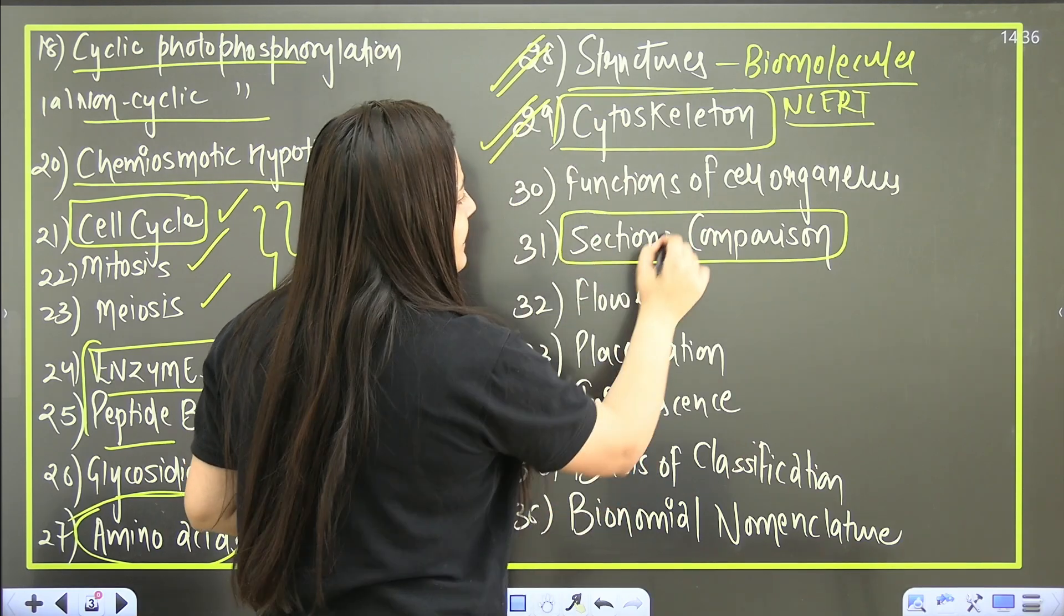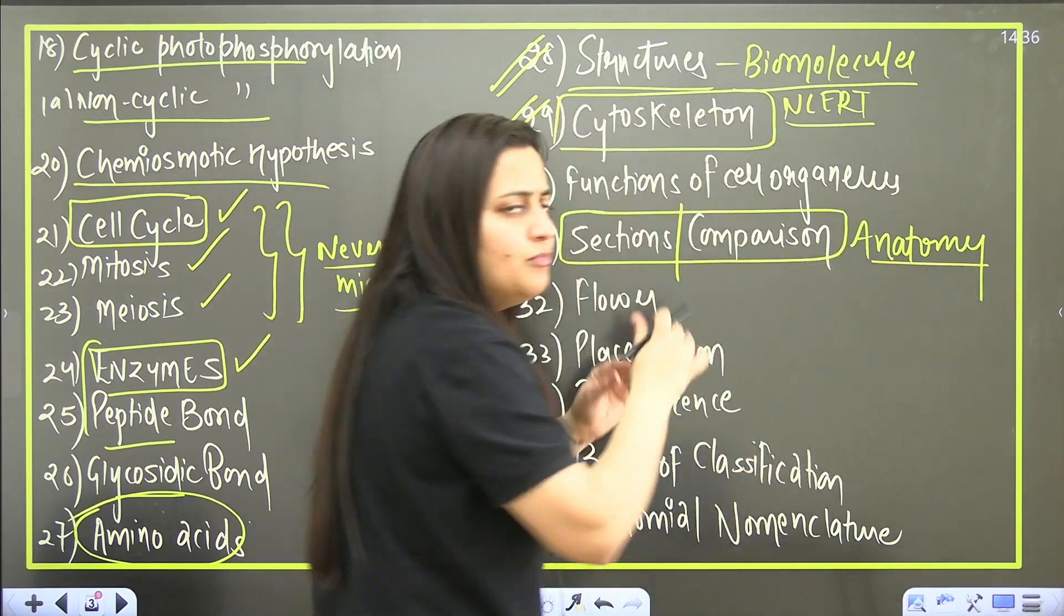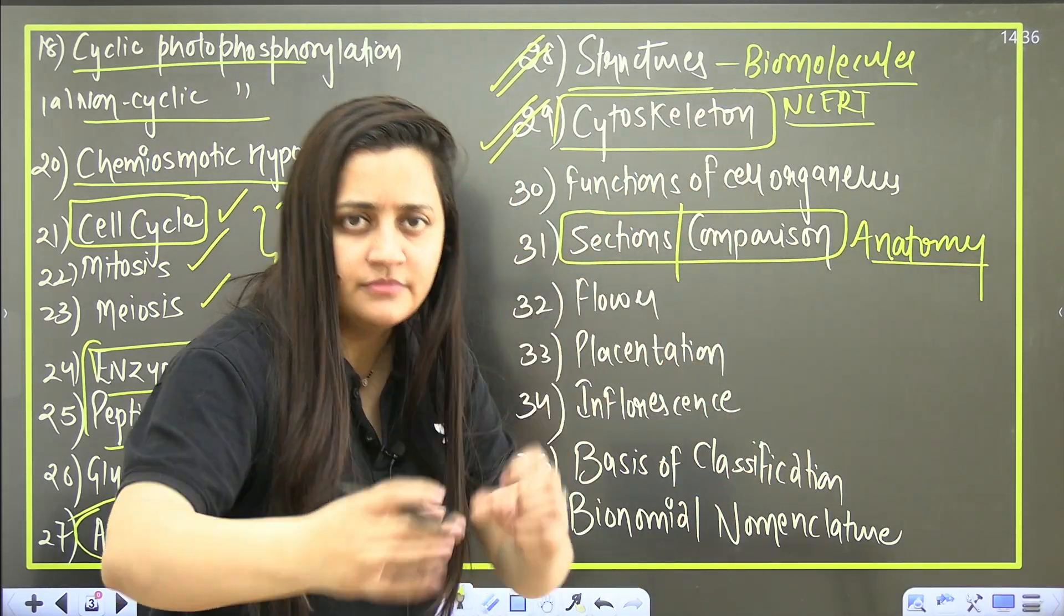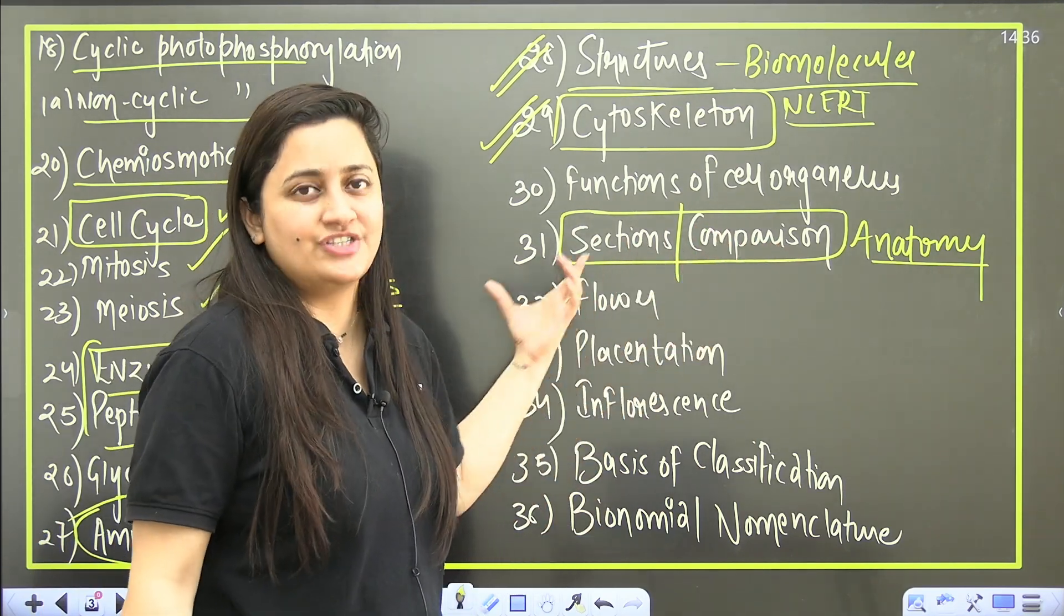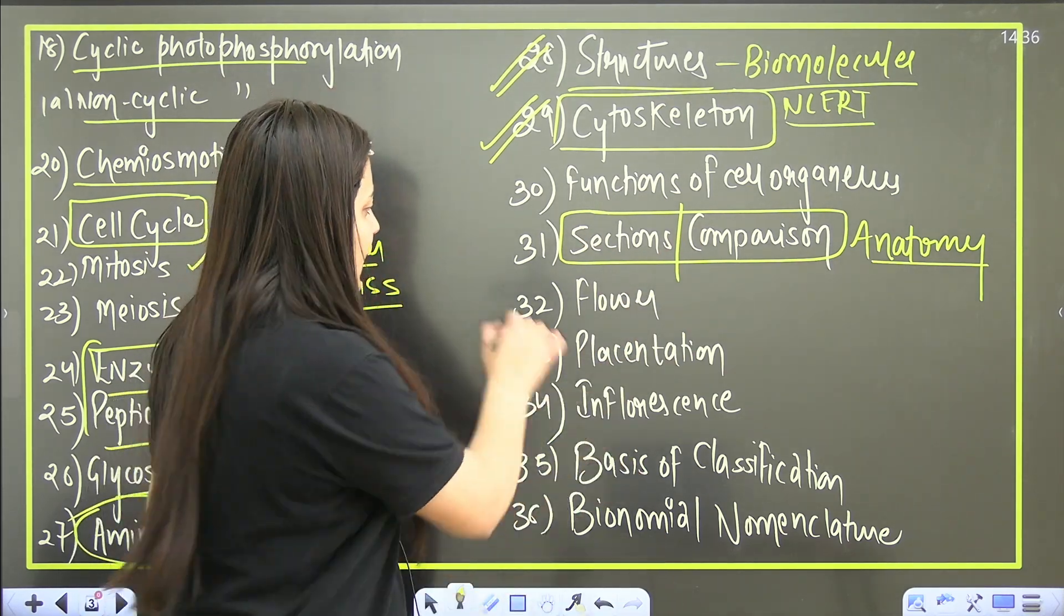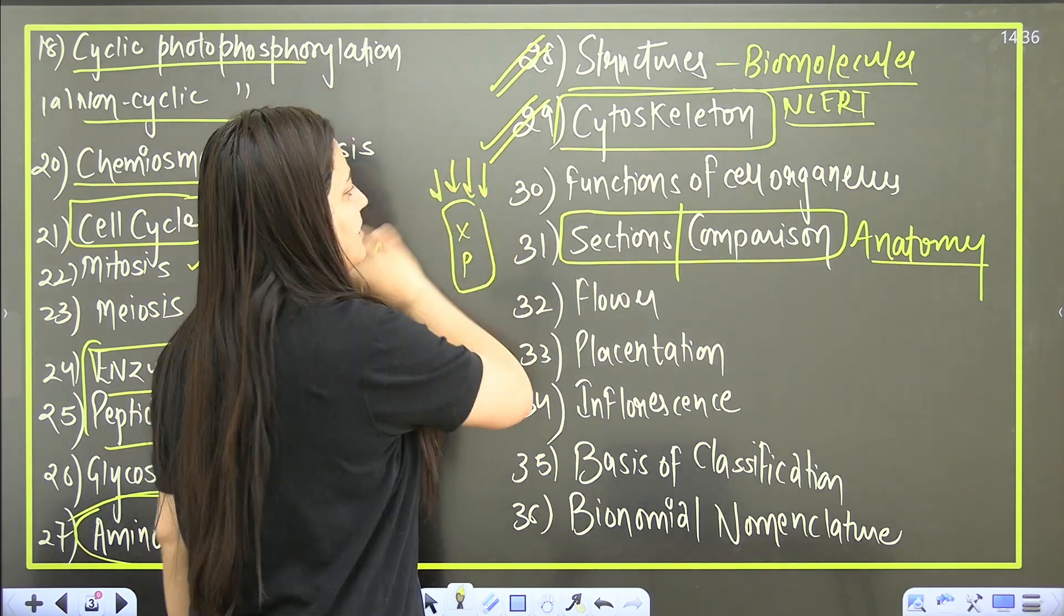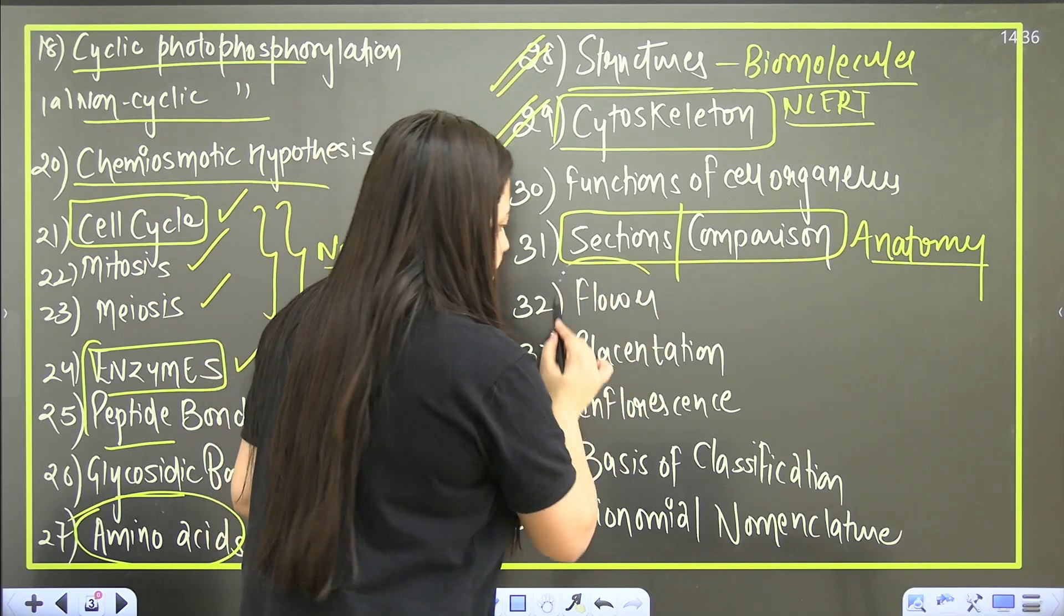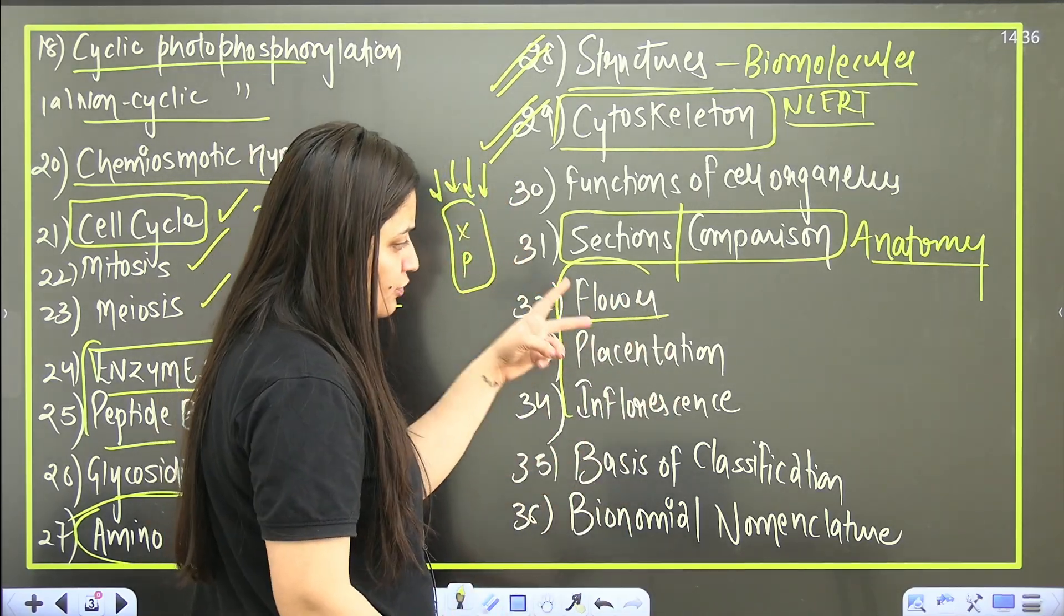Now when it is the anatomy - comparison of the sections. Monocot root, dicot root, your monocot stem, dicot stem or leaves - you should compare that section. Just pick up that part, that will be more than sufficient for all of you. And yeah, xylem and phloem, their elements - they are made up of what and their function, that's it.